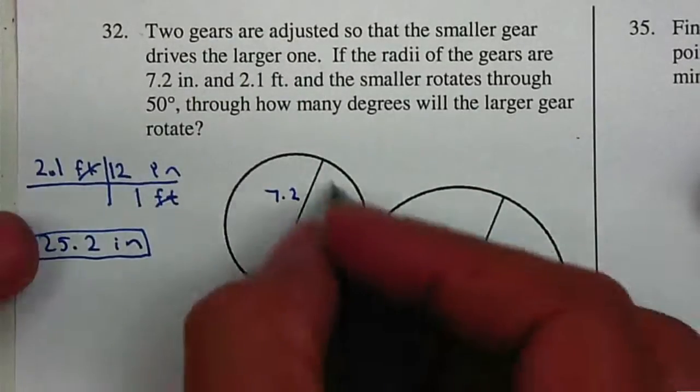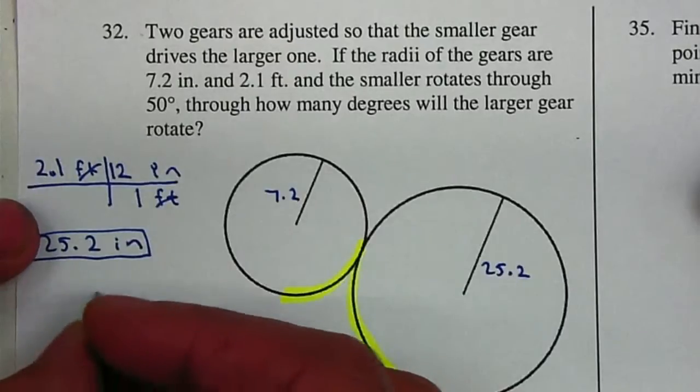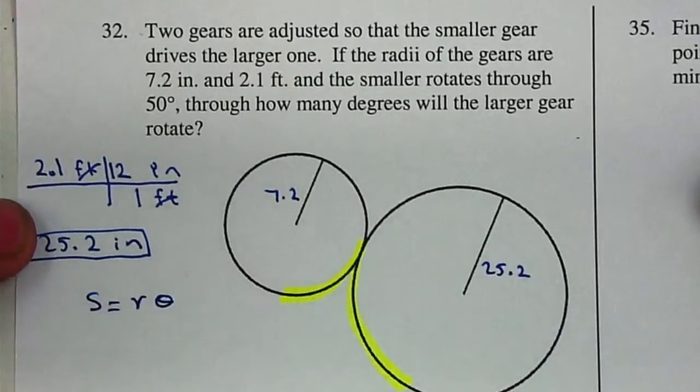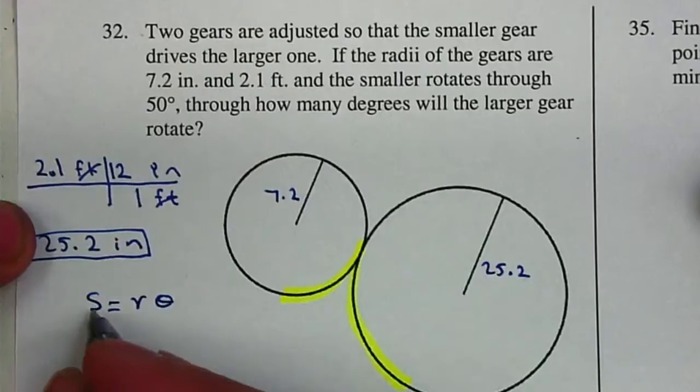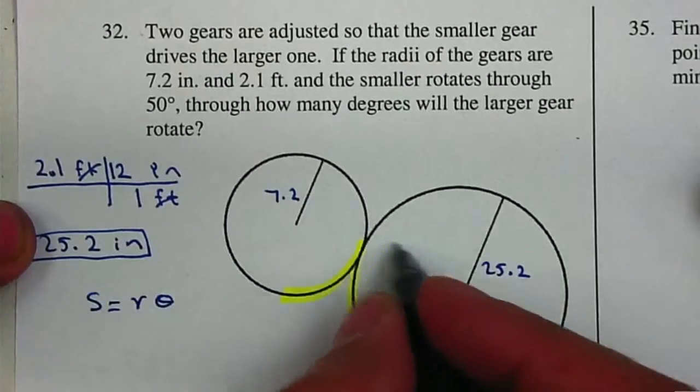So I'm going to find the arc length for the first one. And remember your arc length is S equals r theta. Once I find the arc length for the first one, I'm going to use that arc length to find the degree on the second one.